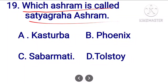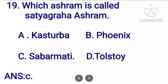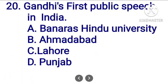Which ashram is called Satyagraha Ashram? The options are Agra Ashram, Kasturba, Phoenix, Sabarmati, and Tolstoy. The correct answer is option C: Sabarmati Ashram, also known as Satyagraha Ashram.